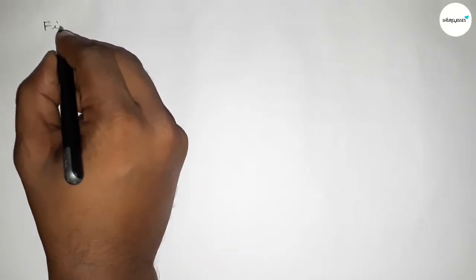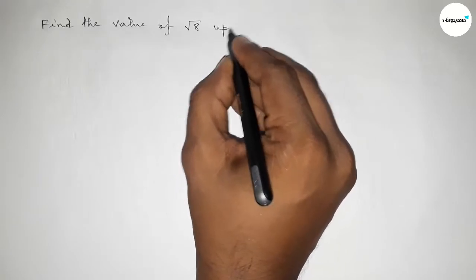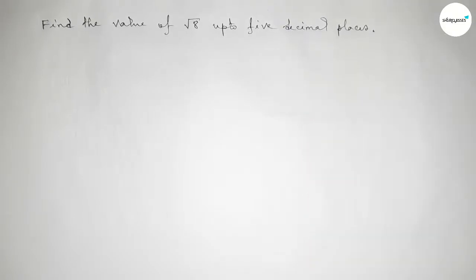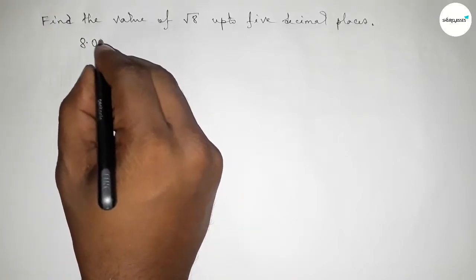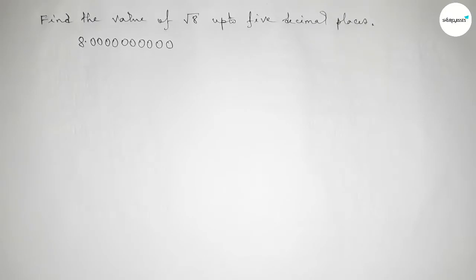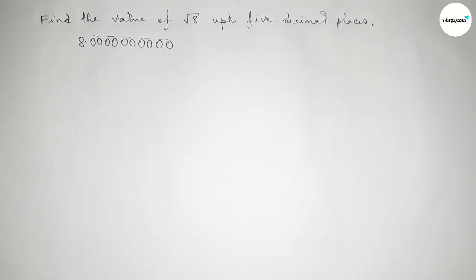Hi everyone, welcome to SI Share Classes. Today in this video we have to find the value of root 8 up to 5 decimal places in an easy way. First, write the number 8 with a decimal point beside it. For 5 decimal places we need to write 10 zeros. Taking 2 zeros as a pair, we get 5 pairs of zeros.